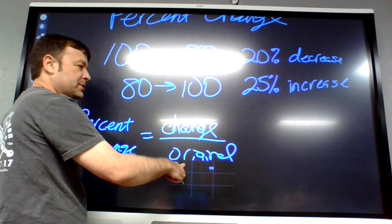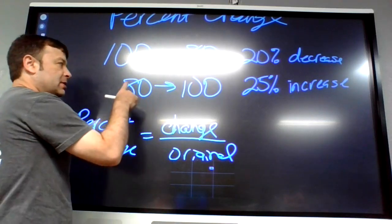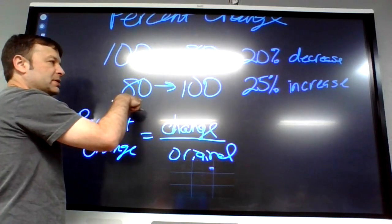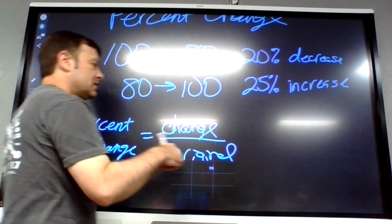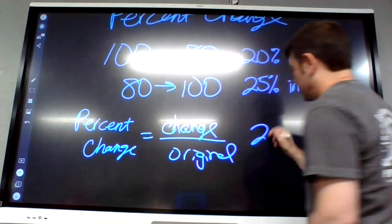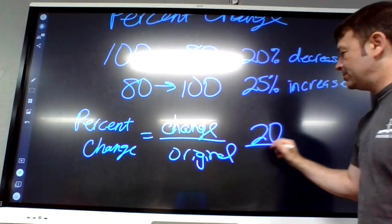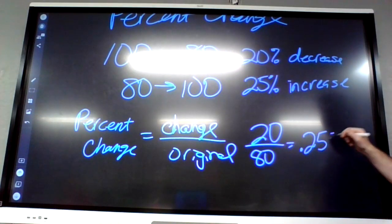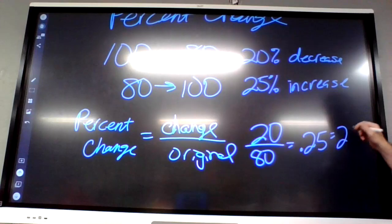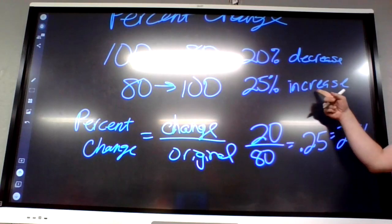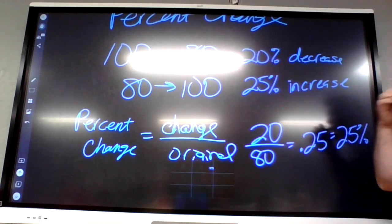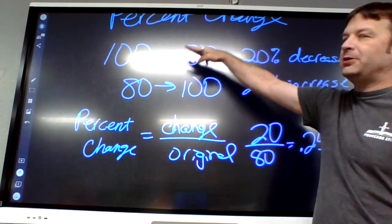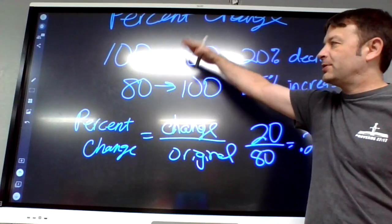The change would be like the 20 — that's the difference between the two numbers. And by original, on this one it's 80. So you do 20 divided by 80. Your calculator would say 0.25, and that's a 25 percent increase. The formula is the same for decrease and increase — there's no difference.